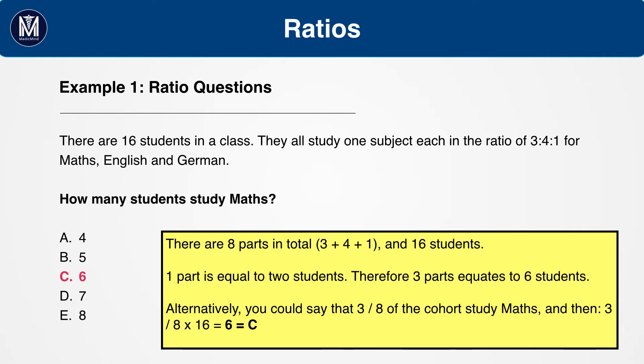The answer is 6c. Here, there are 8 parts in total, 3 plus 4 plus 1. 3 of these study maths, so 3 eighths study maths. There are 16 students in total, so multiply 3 eighths by 16 to get 6 students, c.